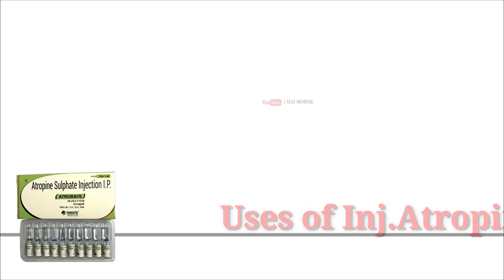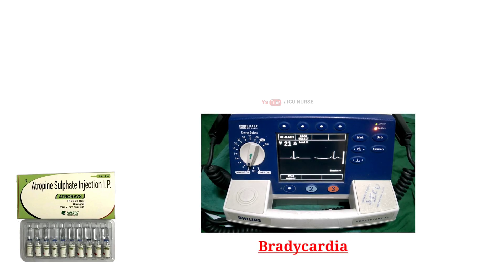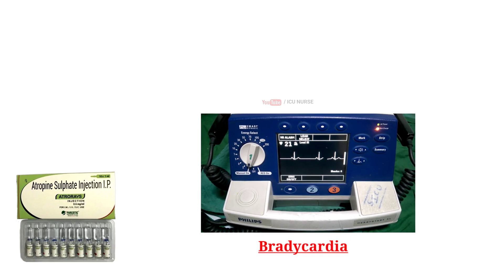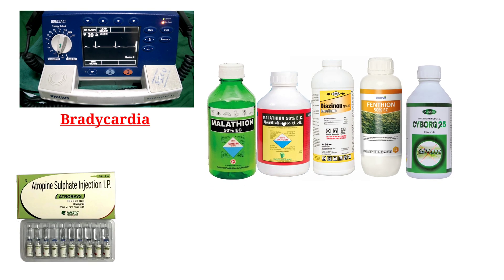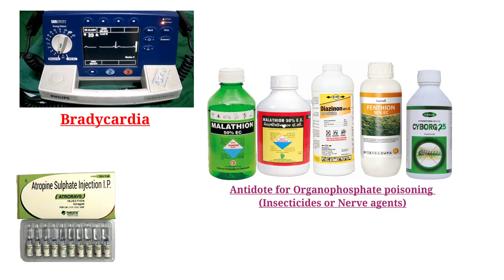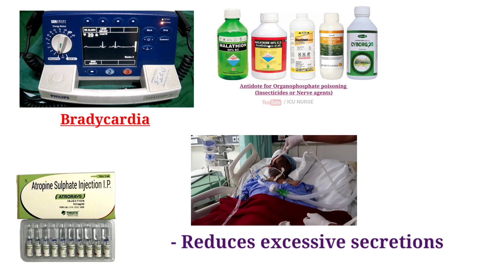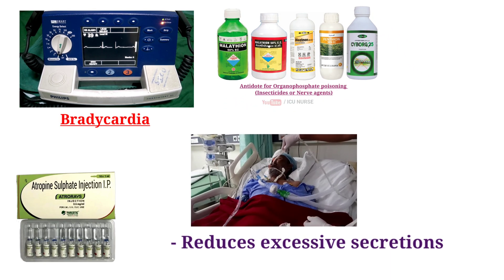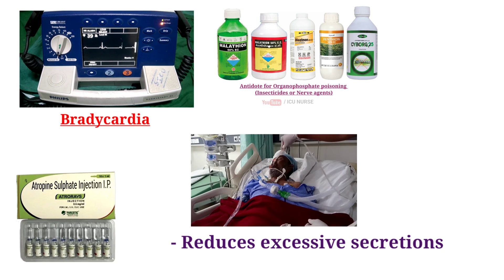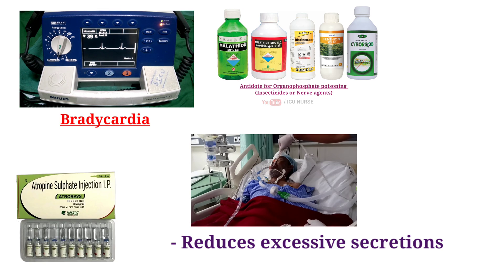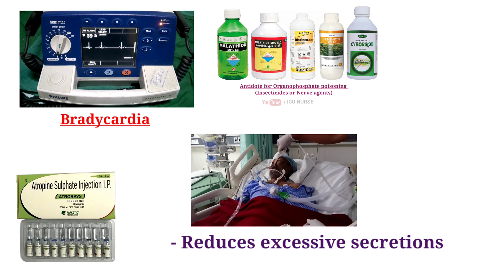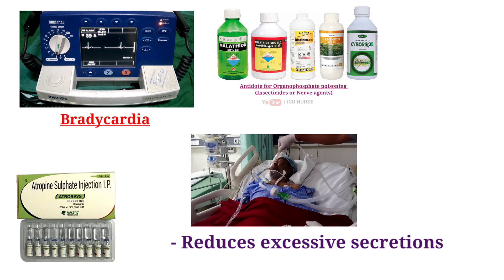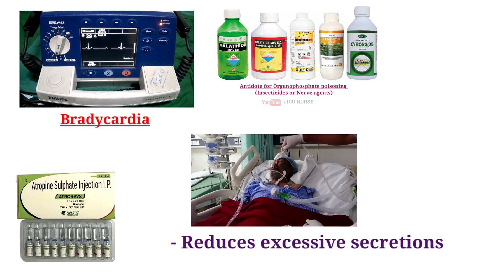Uses of injection atropin: Injection atropin is used in the treatment of bradycardia, which is abnormally slow heart rate. Atropin can be used as an antidote for poisoning by certain organophosphate compounds such as insecticides or nerve agents. It reduces excessive secretions during anesthesia or palliative care. As a pre-operative medication, atropin reduces secretions and prevents vagal reflexes before surgery, and reduces saliva and fluid in the respiratory tract during surgery.